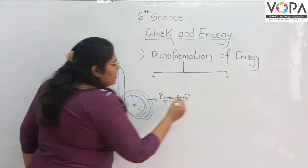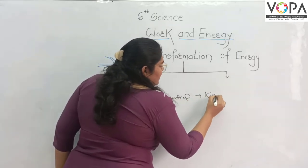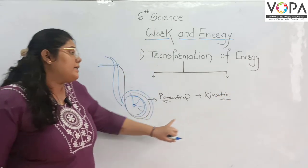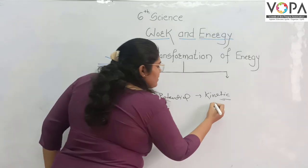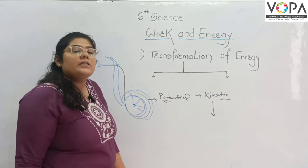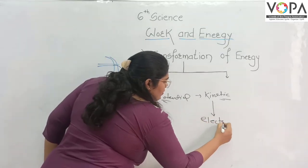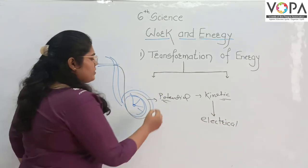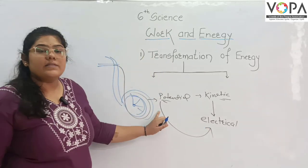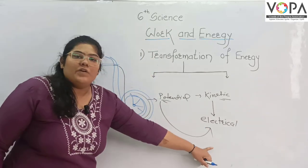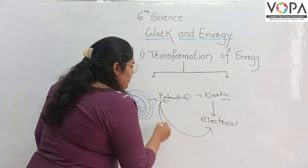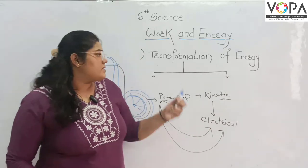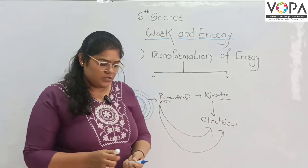When the water is released, it becomes kinetic energy in the form of moving water. When that kinetic energy is converted, it becomes electrical energy. So ultimately, potential energy is converted to electrical energy. This is the transformation of energy — one form of energy gets converted into another form of energy.